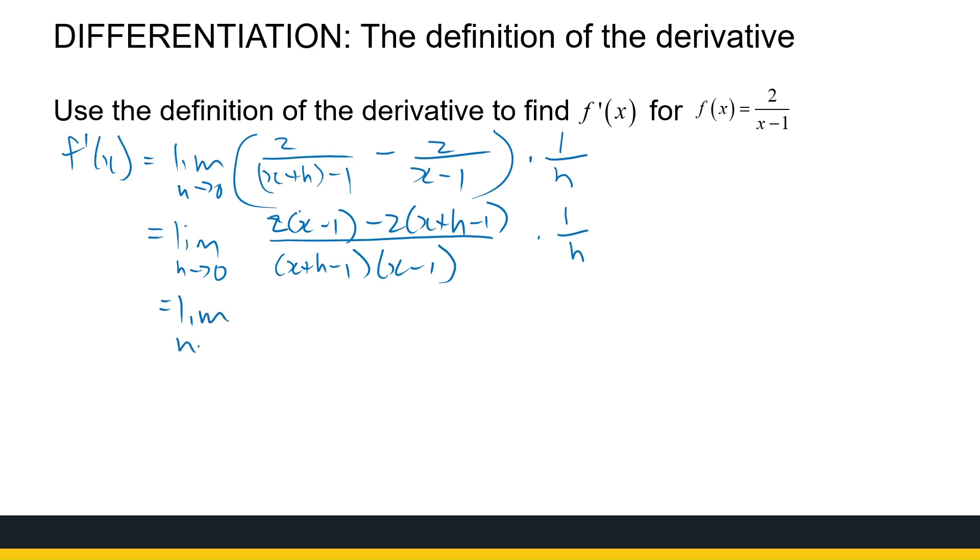So that's the limit as h approaches 0. We simplify the top: 2x minus 2x minus 2 plus 2. I've got minus 2h over x plus h minus 1 x minus 1 times 1 over h. If you're not happy with my simplification, you can pause here, make another step, and write out that numerator to make sure it simplifies to minus 2h. That gives the limit as h approaches 0 of minus 2 over x plus h minus 1 x minus 1.